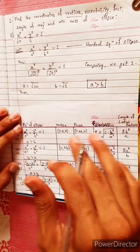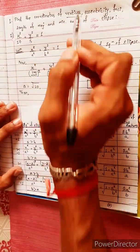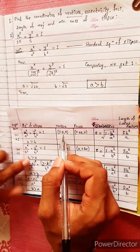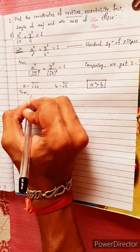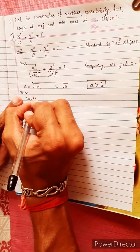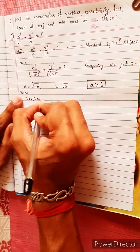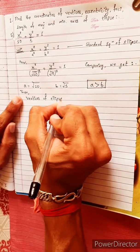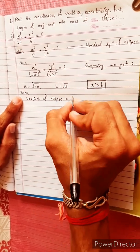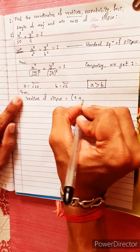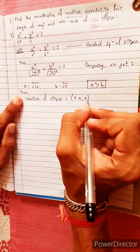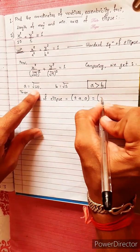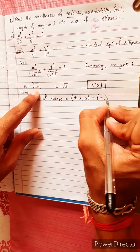This is the formula for vertices of an ellipse. Vertices of ellipse equals plus minus a comma 0. The a value is under root of 6.